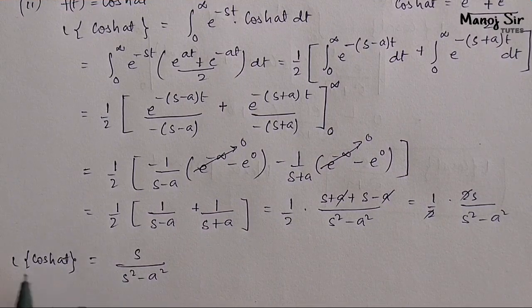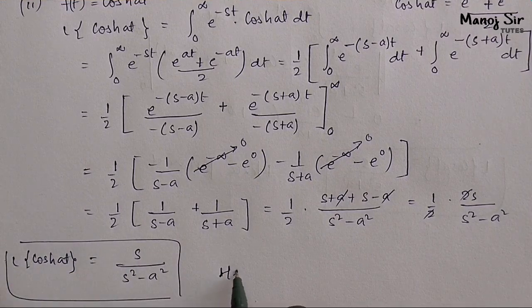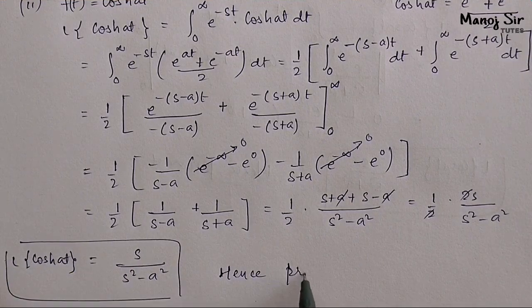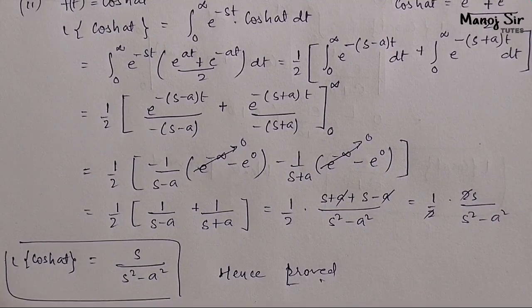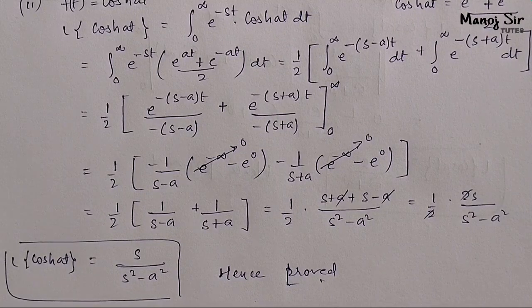Hence proved: Laplace of cosine hyperbolic at equals s upon s squared minus a squared. Both parts are proved. If you like this video, don't forget to hit the like button and please share this video with your friends. Thank you for watching!